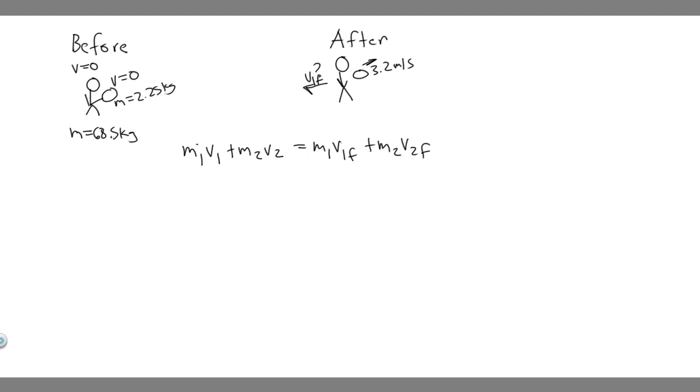So the mass one, M1 is our astronaut, so 68.5 multiplied by their velocity in the beginning. What is their velocity? Well, it's going to be zero. They're not moving.